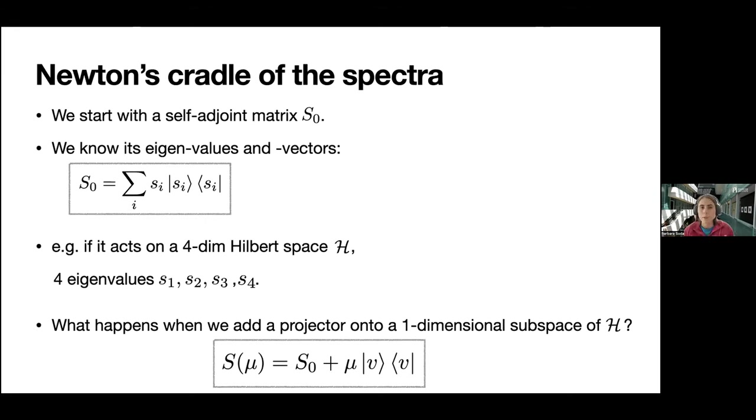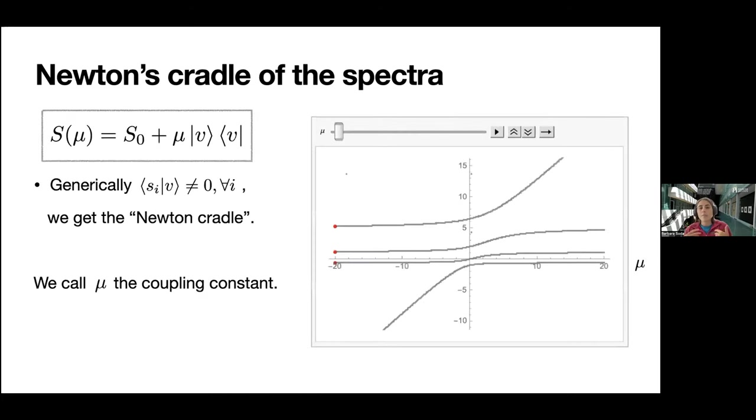So we start with a self-adjoint matrix S₀. Think of some free Hamiltonian, and we know its eigenvalues and eigenvectors. For example, if it acts in a four-dimensional Hilbert space, it has four eigenvalues. Now, what happens to these eigenvalues when we add a projector onto a one-dimensional subspace to it? We've added to our free Hamiltonian S₀ a projector |v⟩⟨v| multiplied by a real number μ, which we call the coupling constant. I can immediately tell you what happens generically. Generically meaning when the overlap between the vector v from the projector and an eigenvector of the original Hamiltonian sᵢ, when this overlap is non-zero, we get what we call the Newton's Cradle behavior.